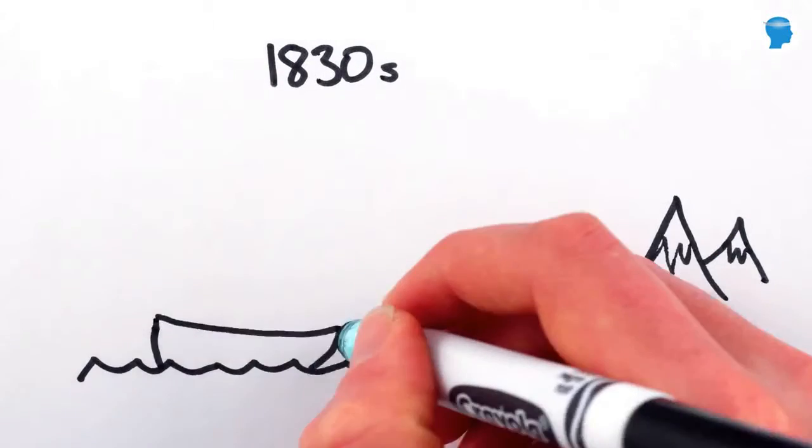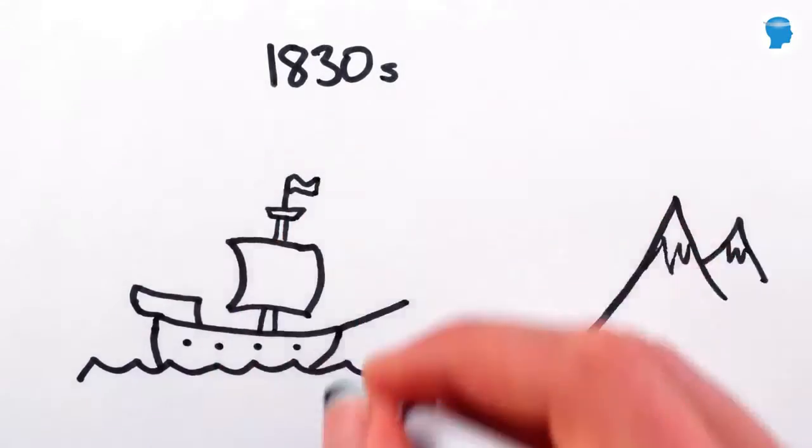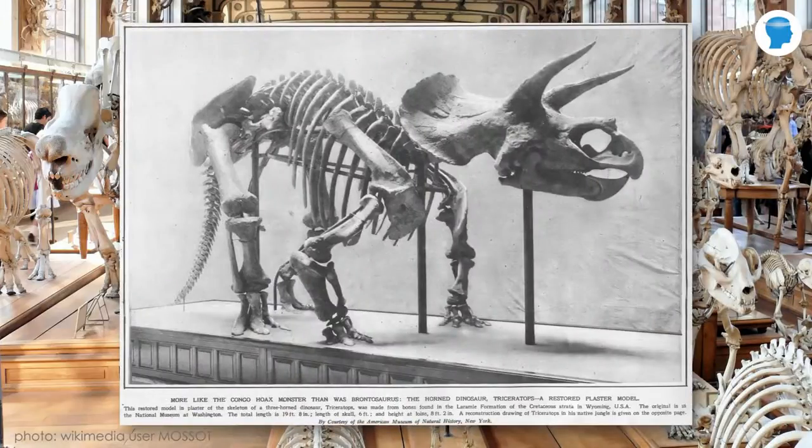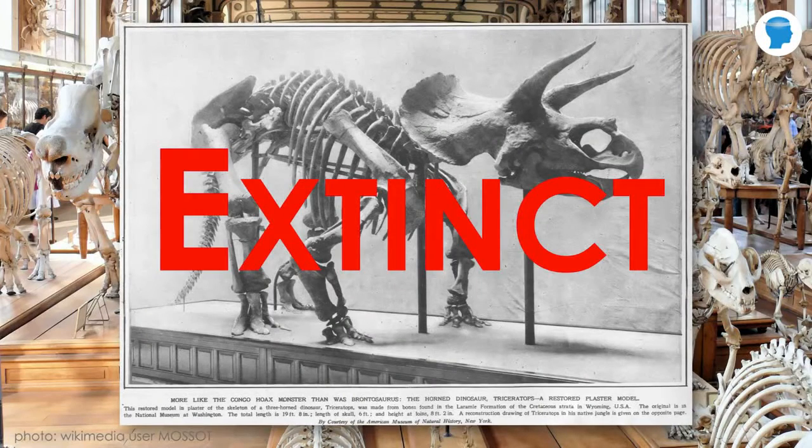Similarly, around the time Charles Darwin was doing his research, scientists, including Darwin himself, had literally begun amassing piles of evidence that showed the nature of life on Earth had changed quite significantly over time.